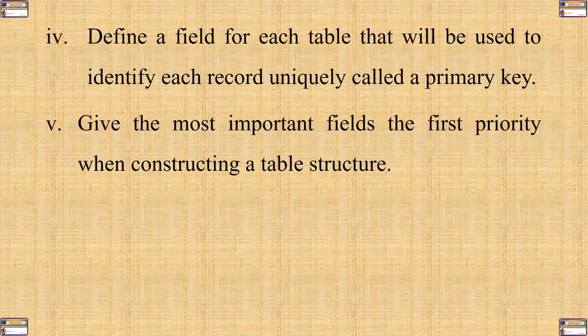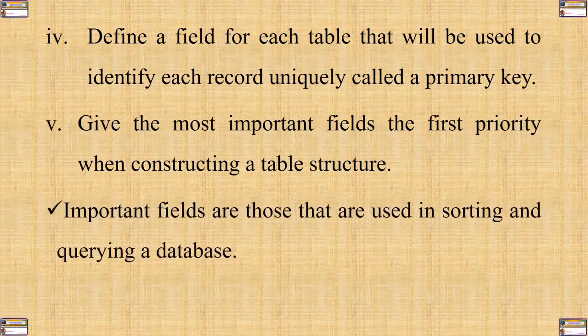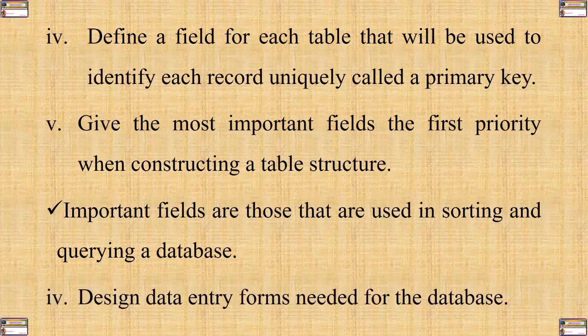Number five: give the most important fields first priority when constructing a table structure. Important fields are those that are used in sorting and querying a database. Number six: design data entry forms that are needed for the database.